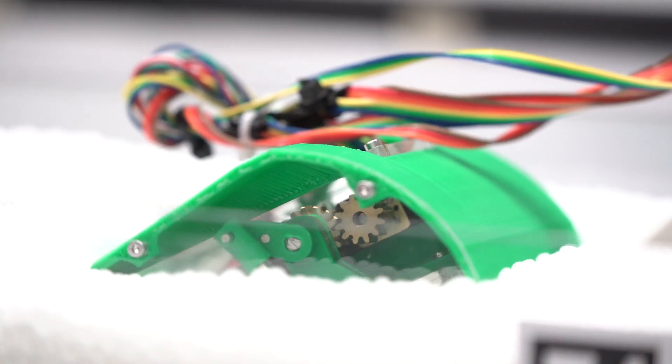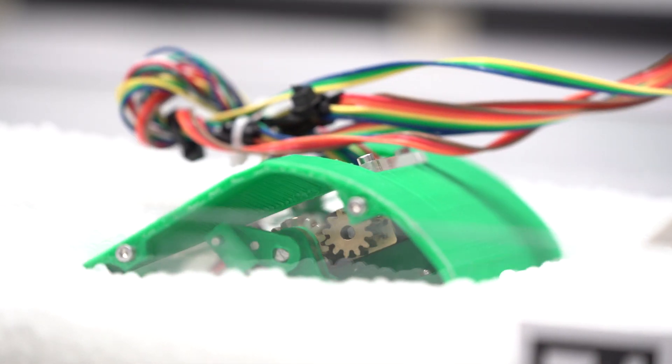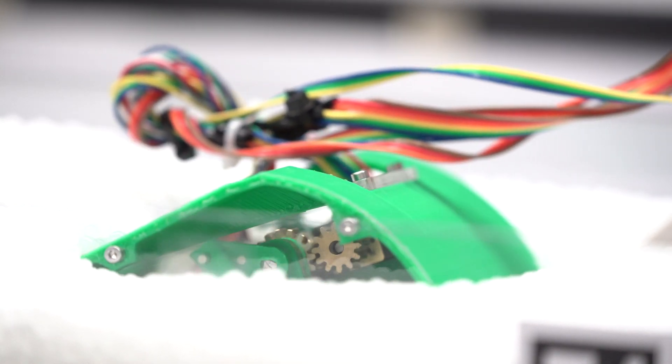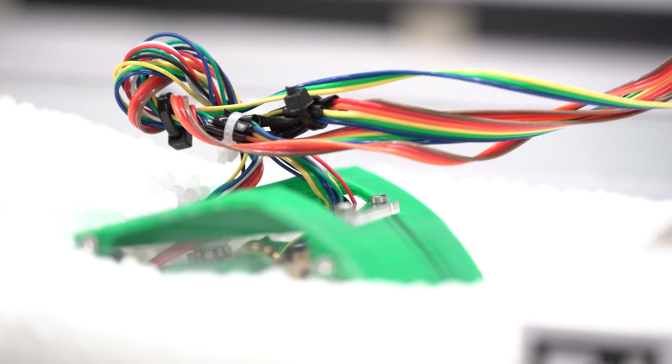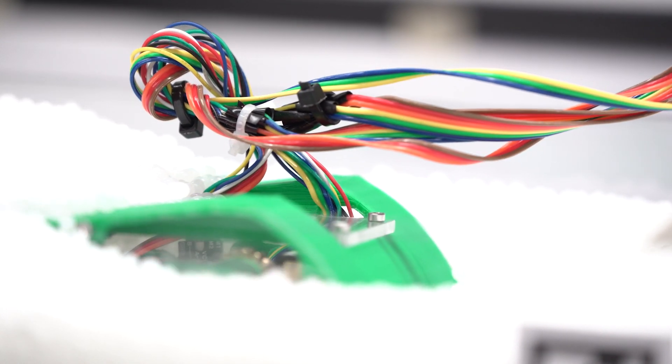Ember is the first robot that can burrow its own body underground using compliant legs. Many robots that burrow underground use rigid elements like fins or drilling mechanisms, but to be able to do this with a soft set of legs is very unique.